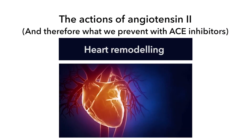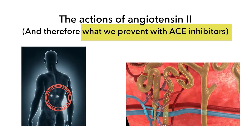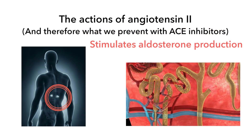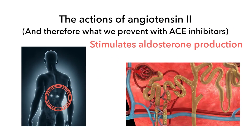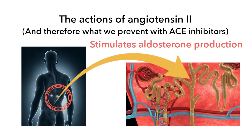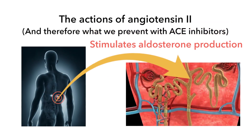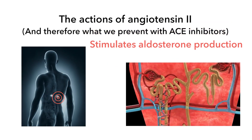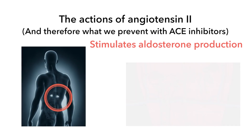Angiotensin II also contributes to ventricular remodeling — the remodeling of the heart that occurs in congestive heart failure. Additionally, angiotensin II binds to receptors on the adrenal gland, yielding the release of a hormone called aldosterone, which we nickname the 'salt saver.' As we save more salt at the level of the kidneys, we save more water, and therefore blood pressure increases.